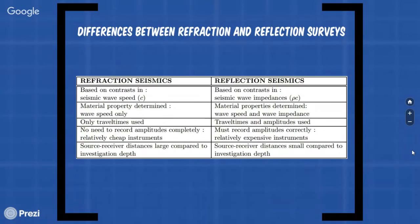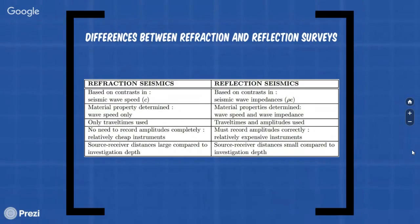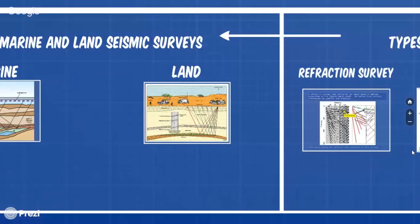In reflection seismic survey must record amplitudes correctly. Therefore, it is very expensive instrumentation. Refraction seismic survey source receiver distance is large compared to the investigation depth. In reflection seismic survey source receiver distance is small compared to investigation depth.